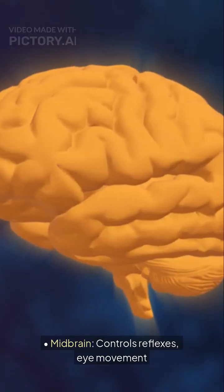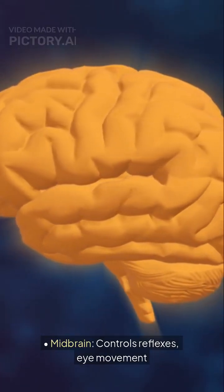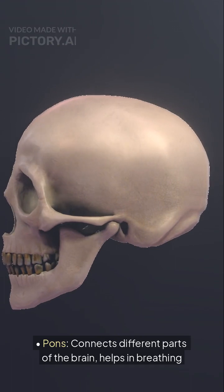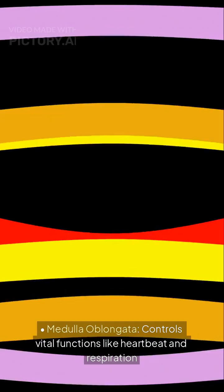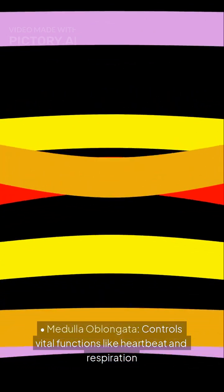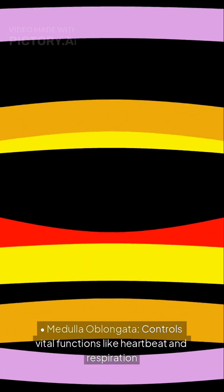The brainstem is composed of the midbrain, which controls reflexes and eye movement; the pons, which connects different parts of the brain and helps in breathing; and the medulla oblongata, which controls vital functions like heartbeat and respiration.